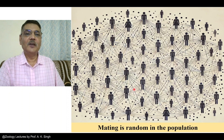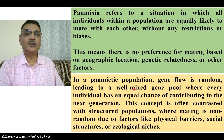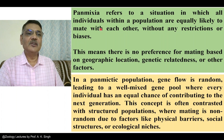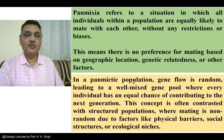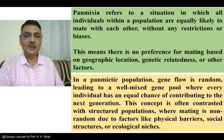If we want to define panmixia or panmictic population, we can say that panmixia refers to a situation in which all individuals within a population are equally likely to mate with each other without any restrictions or biases. This means there is no preference for mating based on geographic location, genetic relatedness, or other factors. In a panmictic population, gene flow is random, leading to a well-mixed gene pool where every individual has an equal chance of contributing to the next generation.